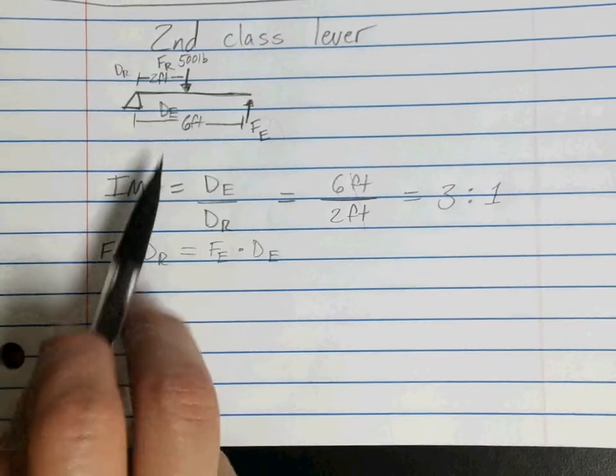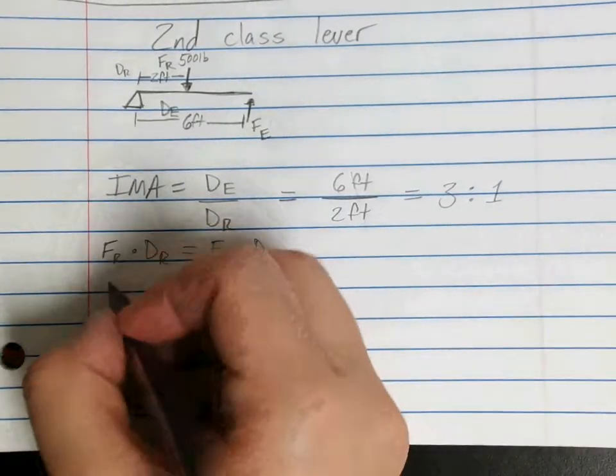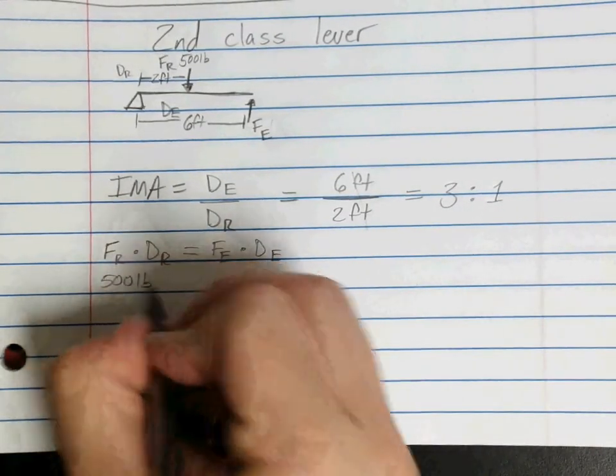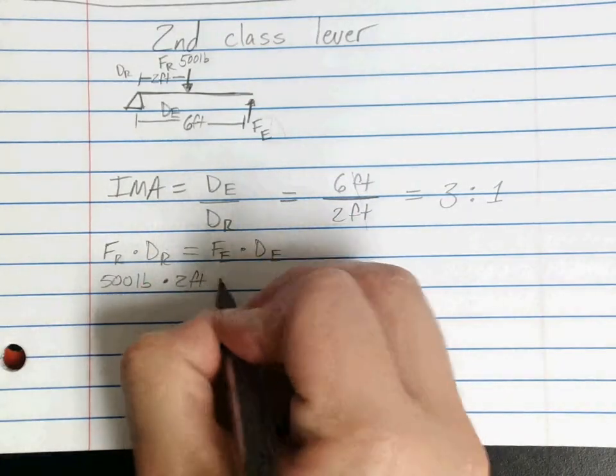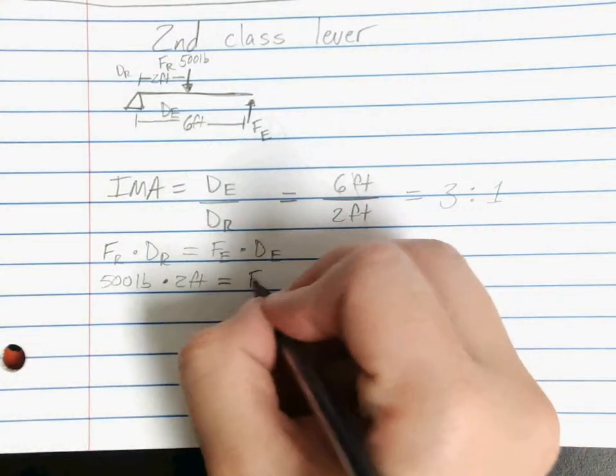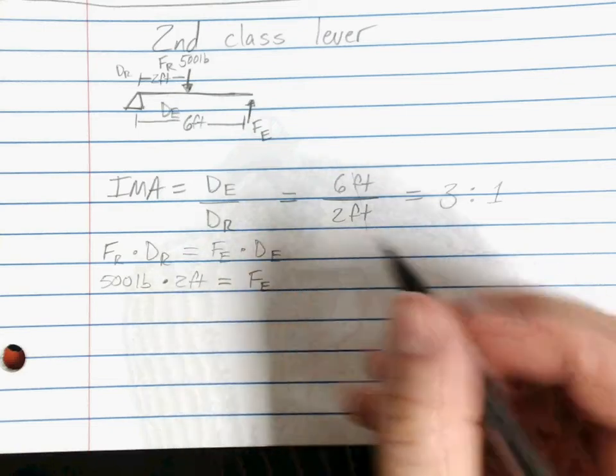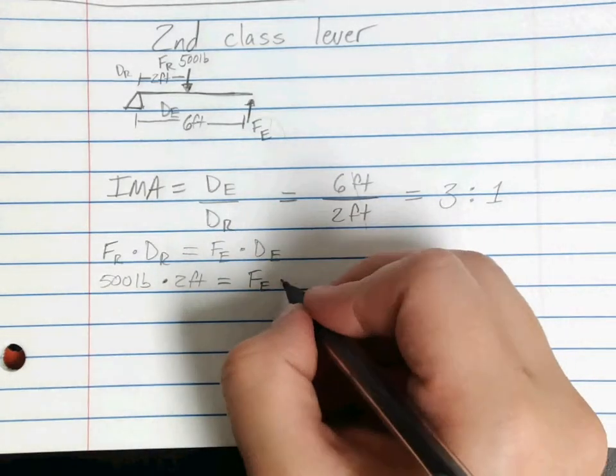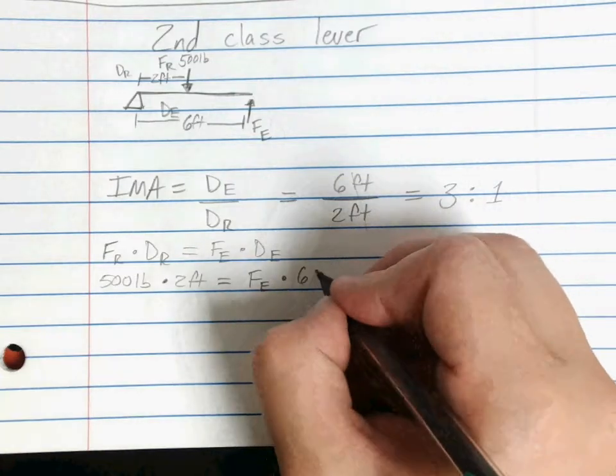So we're going to fill in what we know. We know our FR is 500 pounds, our DR was two feet. And our FE, we don't know, so we leave it as FE. Or again, you can put it as X if you'd like. Times DE, which is our six foot.